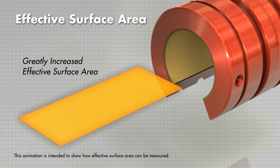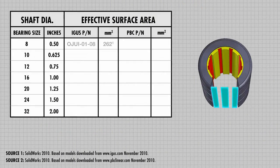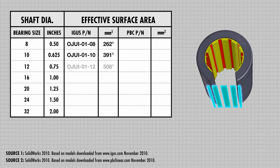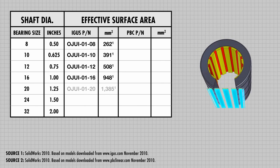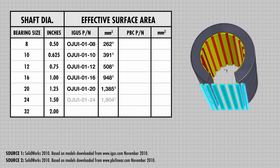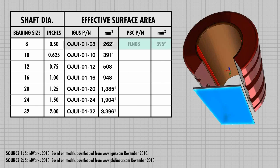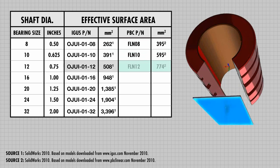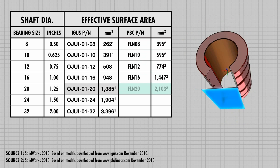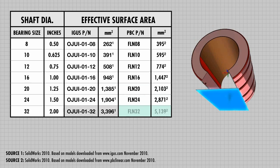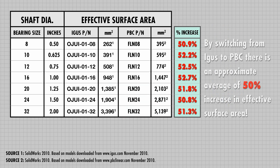Let's follow the process and fill in a table so that we can compare the effective surface area of simplicity and drylin R bearings. The table shows that the effective surface area for PBC's products is larger than the equivalently sized igus bearing. By switching from igus to PBC, there is an approximate average of 50% increase in effective surface area.